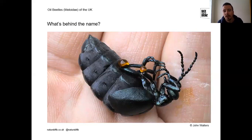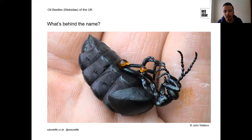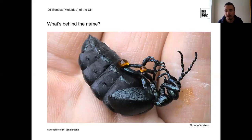The reason they're called oil beetles is because when threatened, they produce an oily substance from their joints — you can see this in a beetle being handled, where it exudes the oil as an anti-predator technique. The oil is foul-tasting, which deters predators and stops the oil beetle from being eaten.